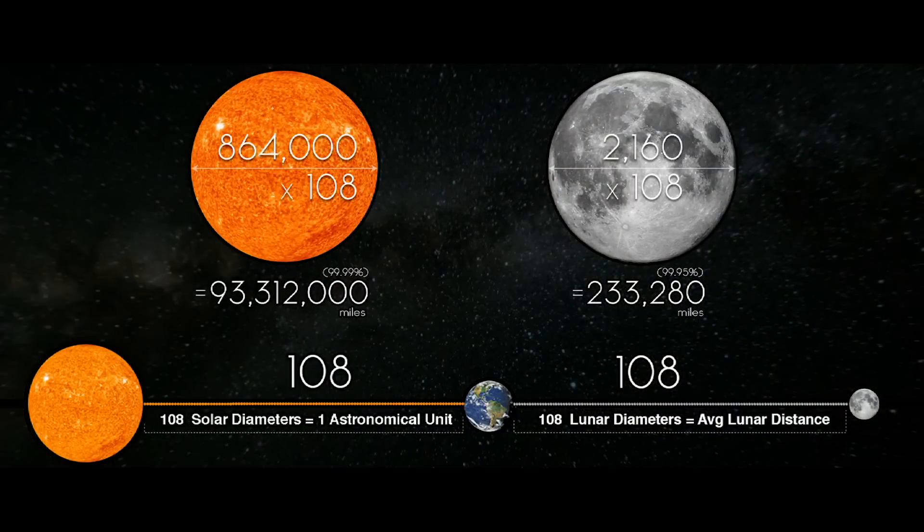There is some variation in that because there's variation in the moon's perigee and apogee, from 221,000 to 252,000 miles. For round numbers, you can think of the moon being about a quarter of a million miles from the earth. The sun, on the other hand, is about 93 million miles. And as we've learned, the diameter of the moon is 2,160 miles, while the diameter of the sun is 864,000 miles.